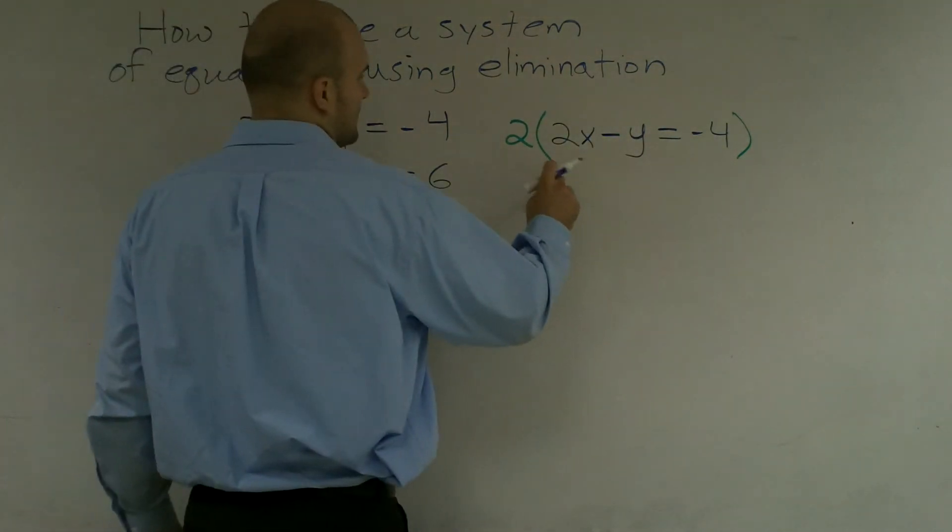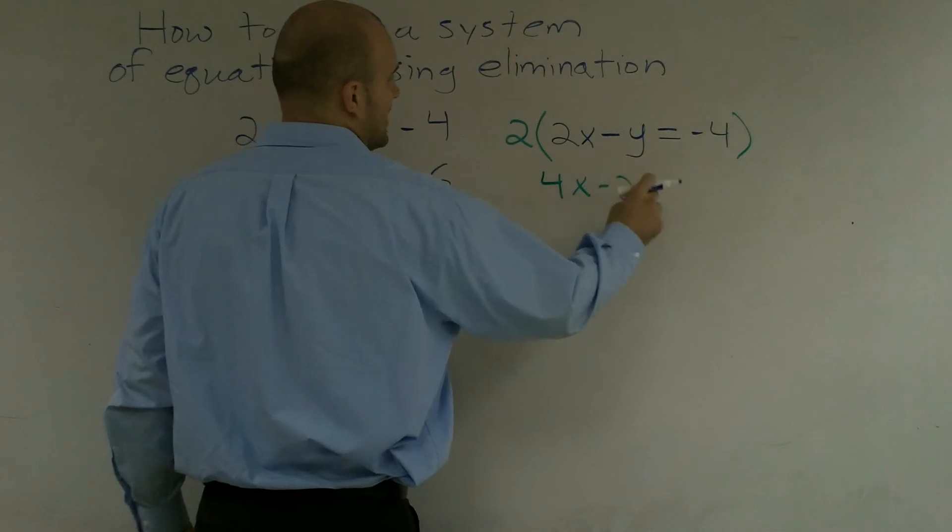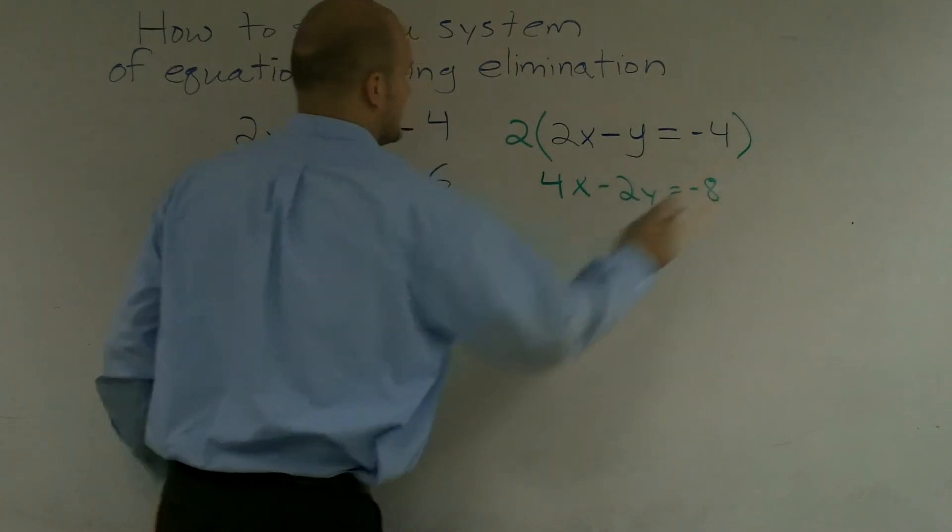So therefore, now I'm going to obtain 4x minus 2y equals negative 8.